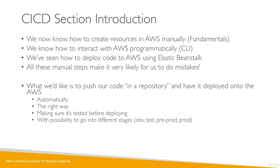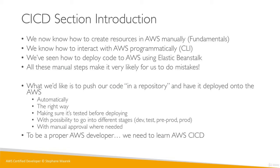We want the possibility to try out different stages — dev, test, pre-prod, prod, or however many stages you may have. And sometimes we may want to have manual approval where needed. For example, there's a long testing happening and before releasing to prod, we want our boss's approval. So to be a proper AWS developer, we're going to need AWS CICD.